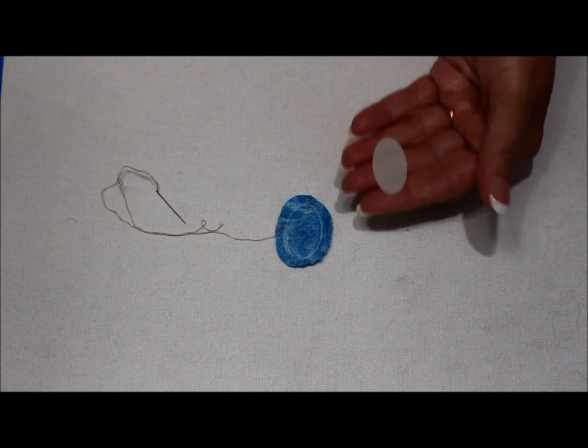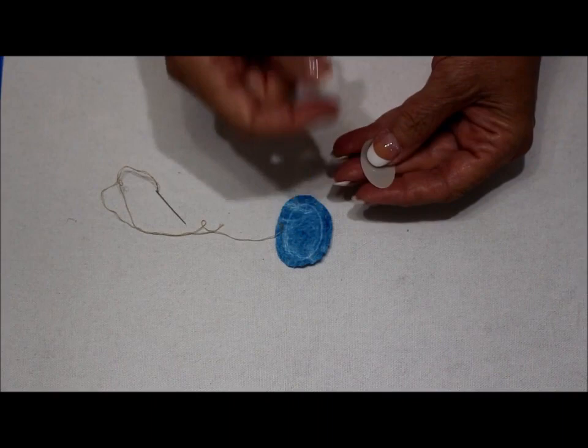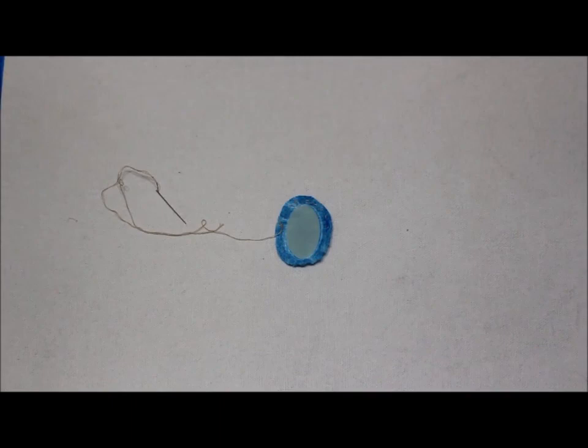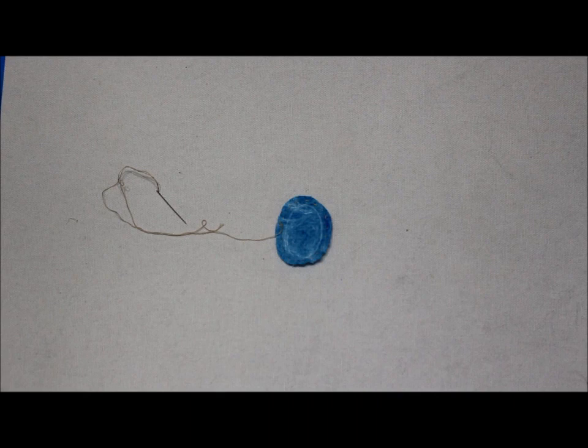Once I've determined the size oval that I need, based on my pattern, I'll pull that from my pack and I've already done this step to save a little time. I lay this on the back of the fabric, I've traced around it, then I cut it with a quarter inch or slightly smaller seam allowance.